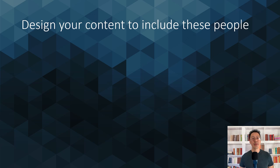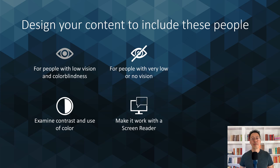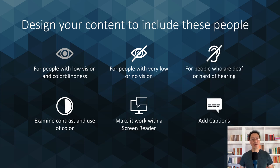Design your content to include these people because they could have difficulty understanding your content if you don't. For people with low vision or colorblindness, examine contrast and use of color. For people with very low or no vision, make it work with a screen reader. And for people who are deaf or hard of hearing, add captions.